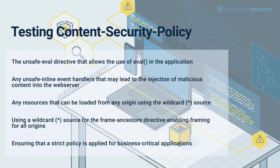Testing the CSP involves examining the CSP meta-element content security policy HTTP response header in a proxy tool. Some insecure configurations to investigate include the unsafe-eval directive that allows the use of eval in the application, any unsafe inline event handlers that may lead to the injection of malicious content into the webserver, any resources that can be loaded from any origin using the wildcard star source, and using a wildcard star source for the FrameAncestors directive, enabling framing for all origins. Ensuring that a strict policy is applied for business-critical applications is also important. Security researchers can also use available tools such as the Crash Test Security Suite to check the strength of their security policies.